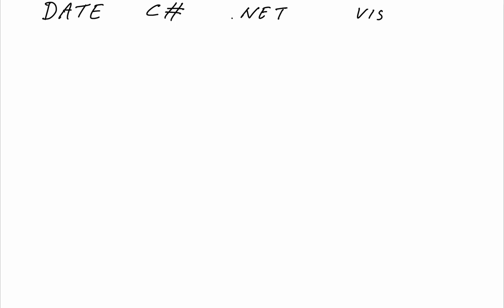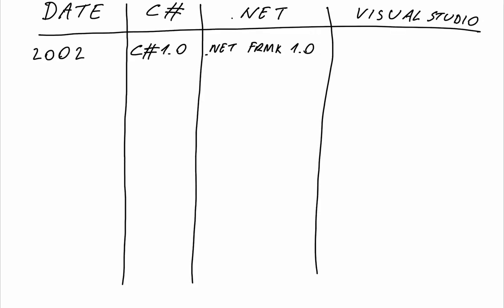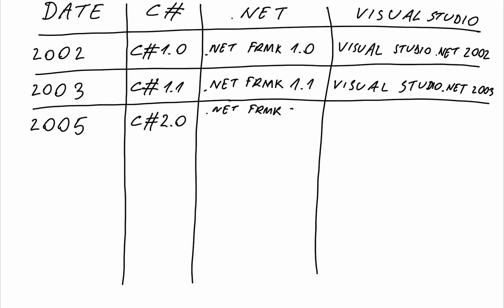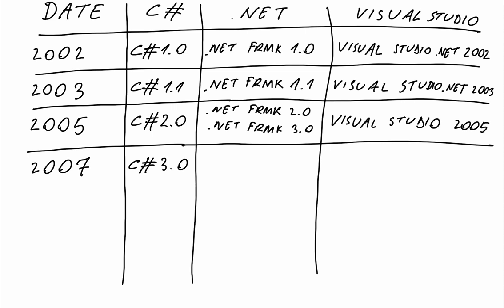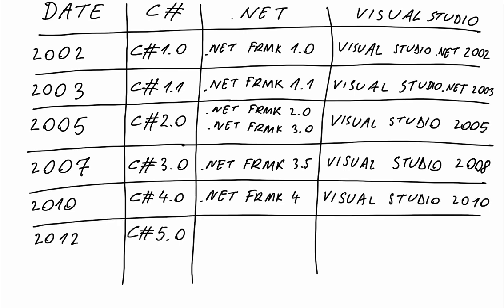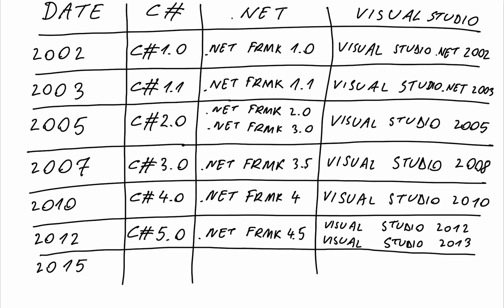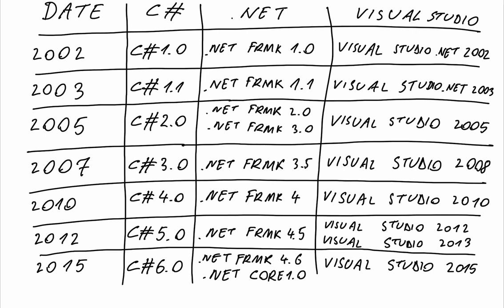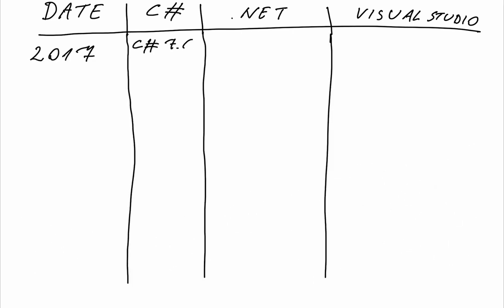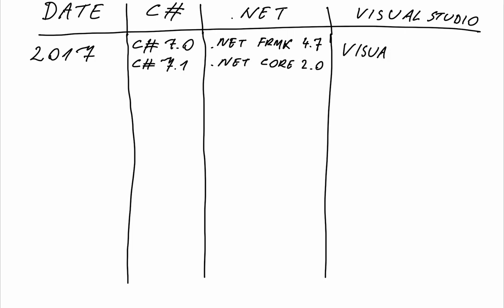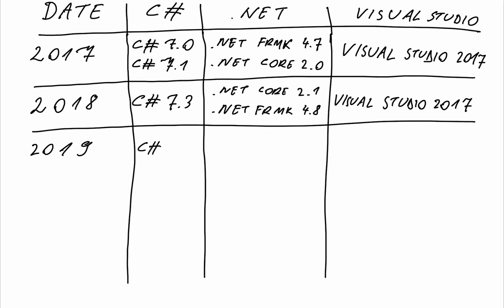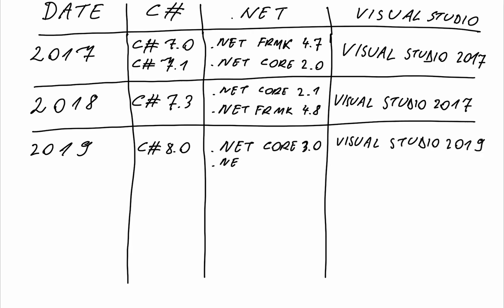We can observe this pattern by looking at the C-sharp release calendar. After the initial release of C-sharp 1.0 in 2002, C-sharp 2.0 was released in 2005, 3.0 in 2007, 4.0 in 2010, 5.0 in 2012 and 6.0 in 2015. Each C-sharp version came in a package with its specific framework and Visual Studio version, as seen in this table. A very important chapter in Microsoft's history is the release of .NET Core 1.0 in 2015. In 2017, C-sharp 7.0 was released, followed by C-sharp 8 in 2019, C-sharp 9 in 2020 and C-sharp 10 in 2021.